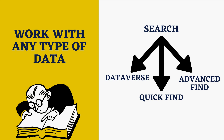Now let's discuss search. In Microsoft Dataverse you can find three ways to query rows: Dataverse search, quick search — which can be single-table or multi-table — and advanced find. You should remember that multi-table quick find is also called categorized search.